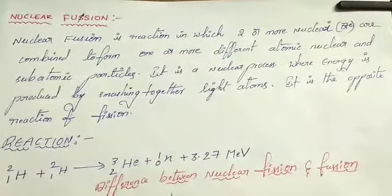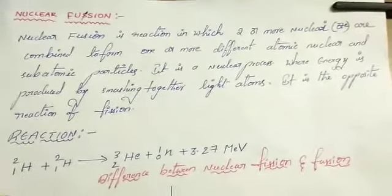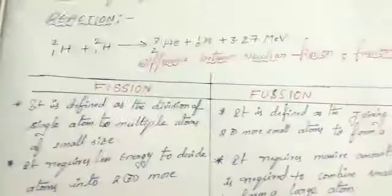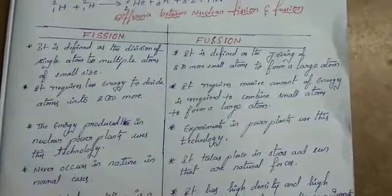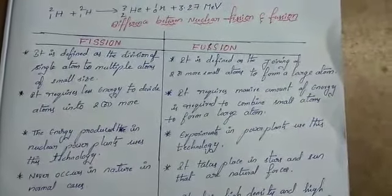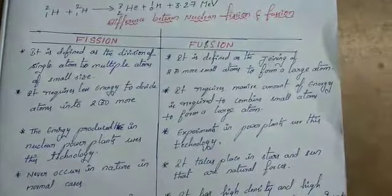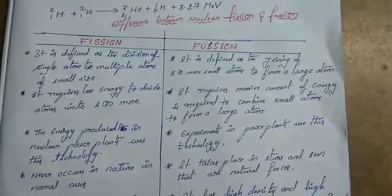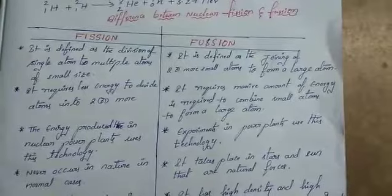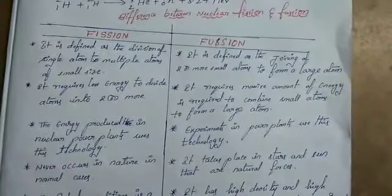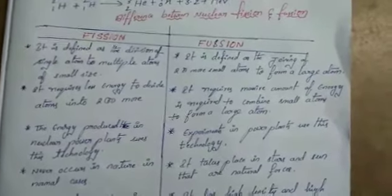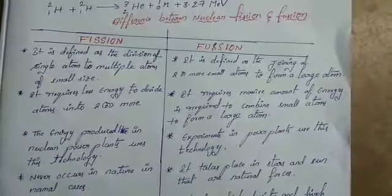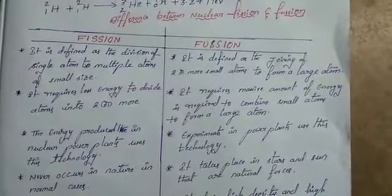Now see the differences between fission and fusion. In fission, it is defined as the division of a single atom into multiple atoms of small size — for example, uranium is split into barium and krypton. In fusion, it is the joining of two or more small atoms to form a large atom — for example, two hydrogen atoms combine to form helium.